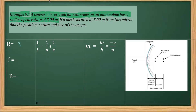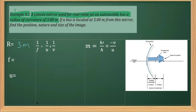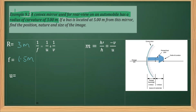Now it's important to know why I'm taking the radius of curvature as positive and not negative. As you can look at this figure, this radius of curvature is this distance, and it is to the right of the pole. Any distance measured to the right of the pole is taken as positive, and that's why I'm taking R as positive 3. Further, there is a relation between the focal length and the radius — focal length is half the radius of curvature — so the focal length is also positive: 1.5 meters.